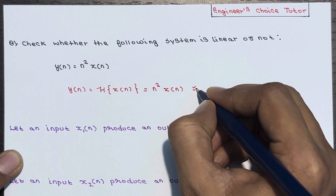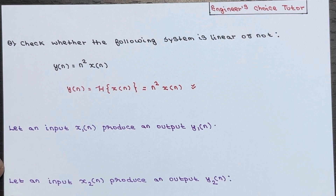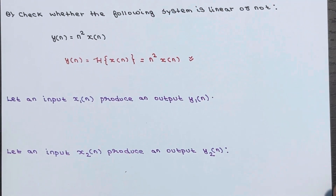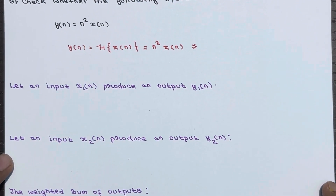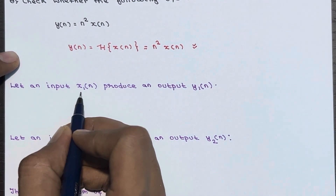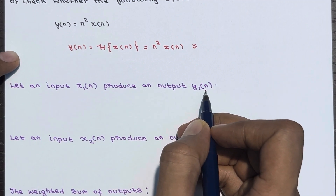This is the easiest approach to check whether the system is linear or not. The last approach was also easy — it was diagrammatic — but this algebraic approach is even easier. You can decide which one suits you. For the first step, let an input x1(n) produce an output y1(n).